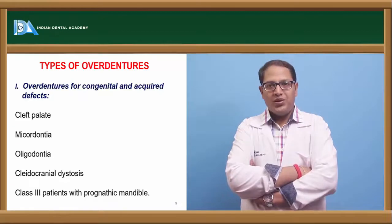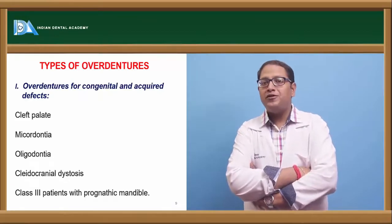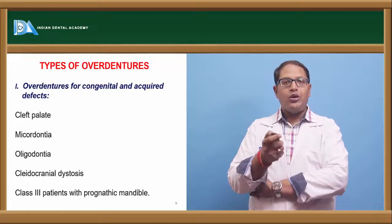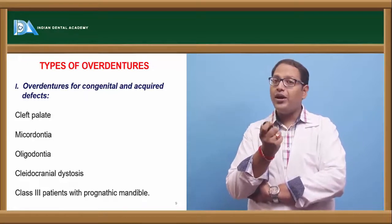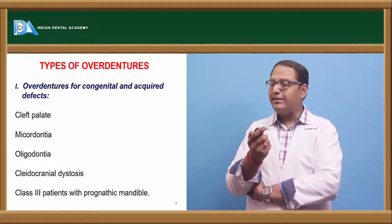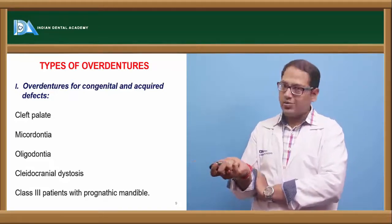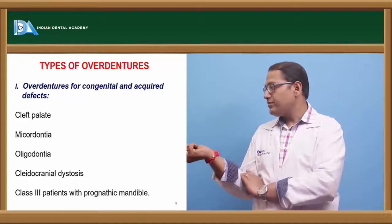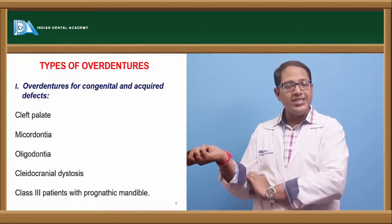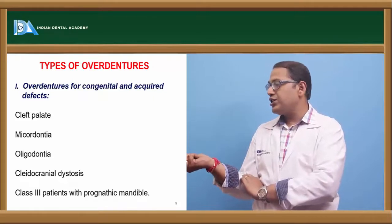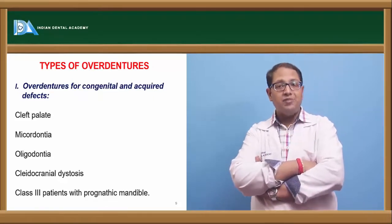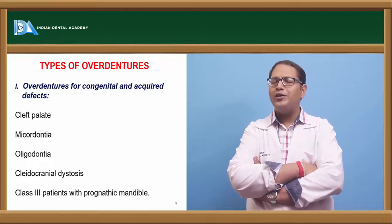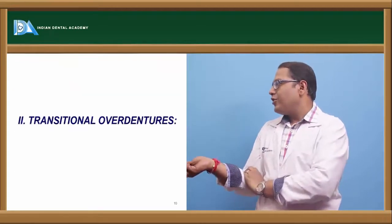The types of overdentures include overdentures for congenital and acquired defects. Congenital and acquired defects that may require overdenture include cleft palate, microdontia, oligodontia, amelogenesis imperfecta, cleidocranial dysostosis, and Class 3 patients with prognathic mandible where balanced dentures are contraindicated and overdenture is a good option.